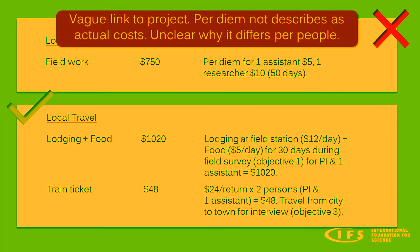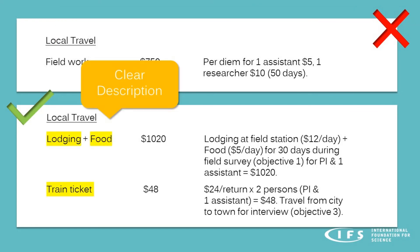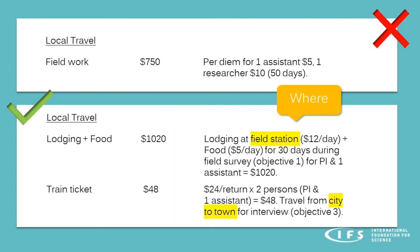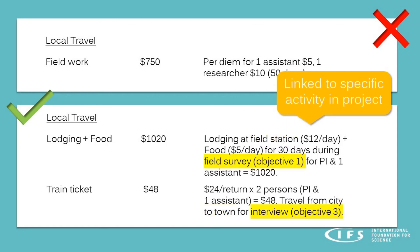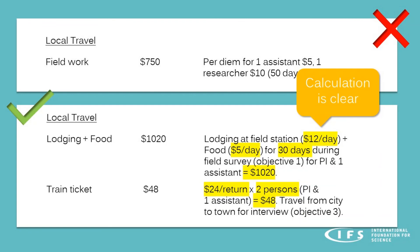The bad example provides a vague link to the project. The per diems are not broken down into actual costs — for example, is it for food, accommodation, or travel? This is not clear. Also, no explanation is given as to why it differs between the researcher and the assistant. In the good budget example, a clear description of the actual cost is given. Details of locations are provided — though when preparing your budget, be sure to list a location name. Each cost is linked to a project activity, and it describes who each cost is for. There is also a clear breakdown of the cost so that we can understand how the total was calculated.